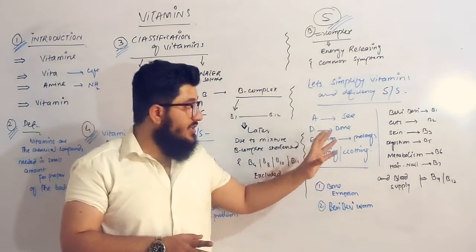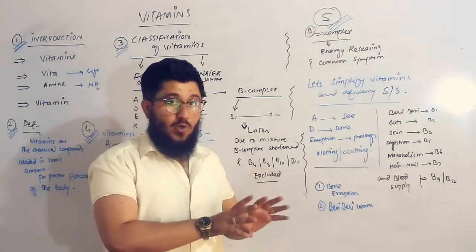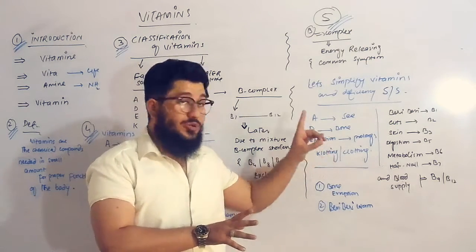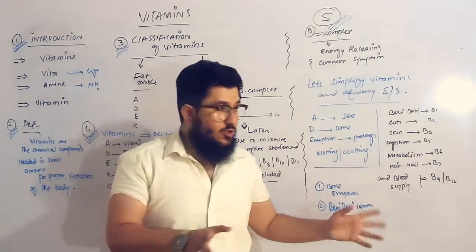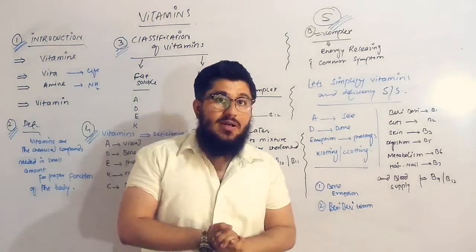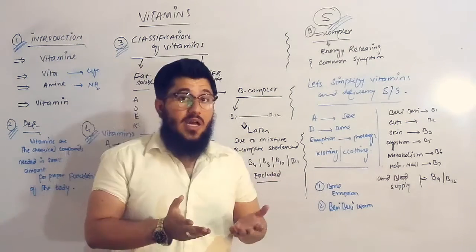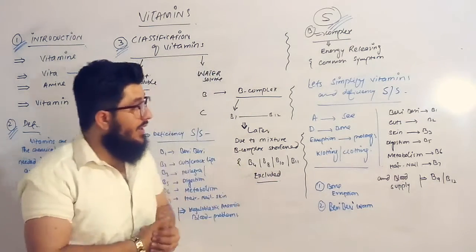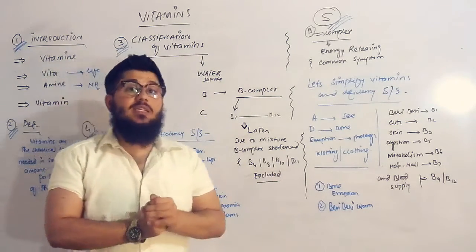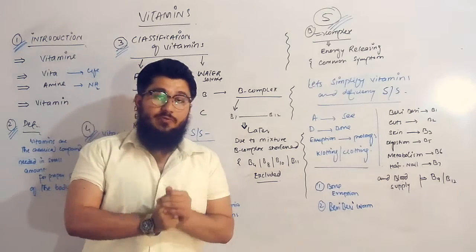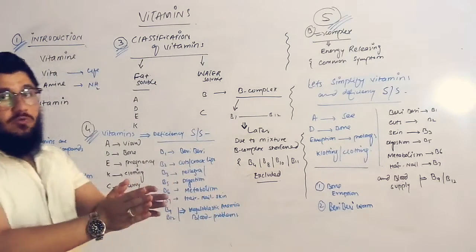These two mnemonics — 'bone eruption' and 'berry berry worm' — help you remember all the vitamins and the signs and symptoms caused by their deficiency. That's a summary from my side regarding vitamins. If you have any questions, ask in the comment box and we will answer soon. Thank you for watching.